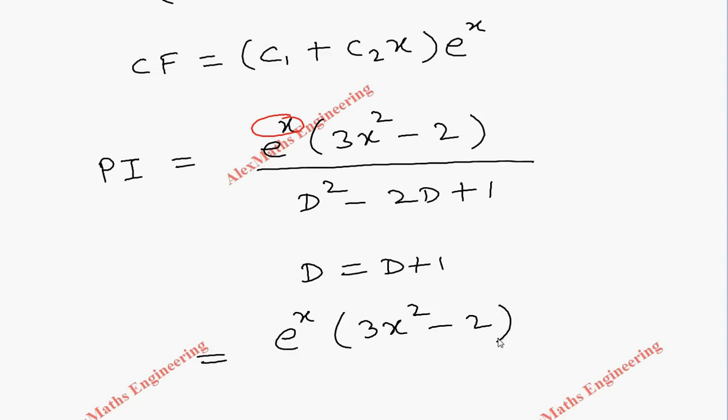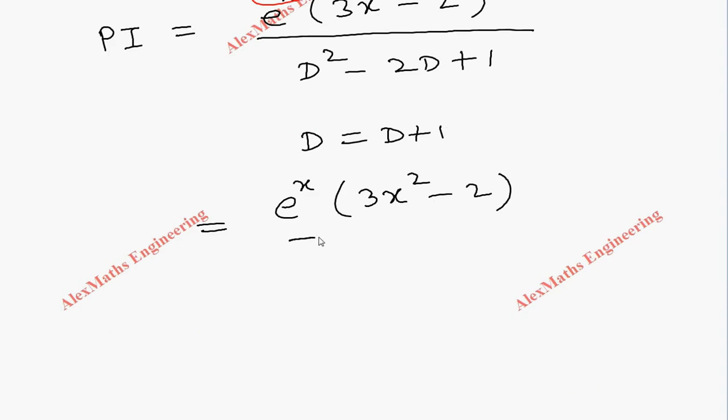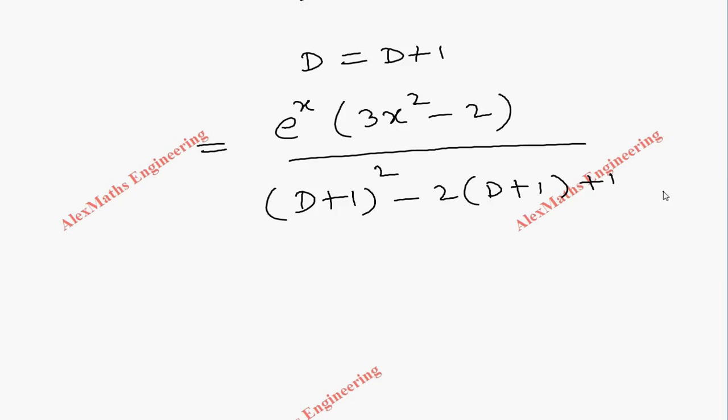So it's going to be D plus 1 whole squared minus 2 times D plus 1, then plus 1 at the end. Now numerator e to the power x times 3x squared minus 2 as it is.